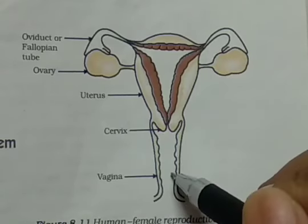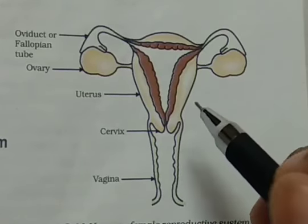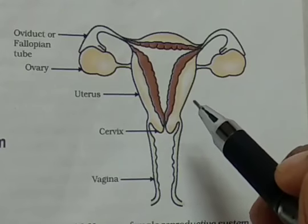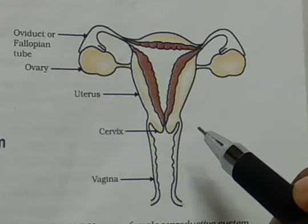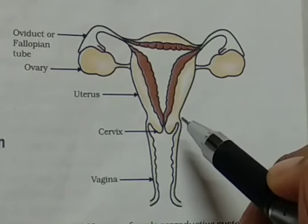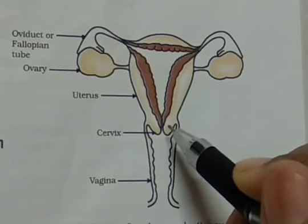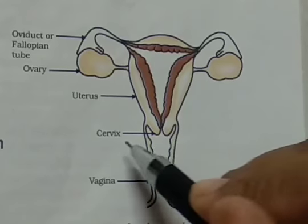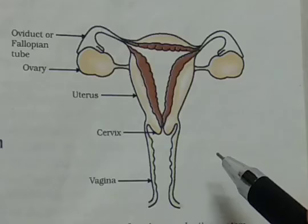After the complete growth of the baby, which takes nine months, the delivery of the baby occurs. The baby comes out of the female reproductive system through this narrow passage. The cervix and the vagina together are also called as the birth canal.